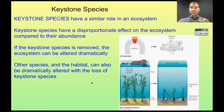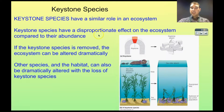A Keystone Species is similar to a Keystone in an arch, in that if the Keystone Species is removed, there will be big impacts on the rest of the arch — and in that case the arch is the ecosystem. They have a disproportionate effect on the ecosystem compared to their abundance. Compared to the numbers of individuals of the species in the ecosystem, the numbers might be quite small.